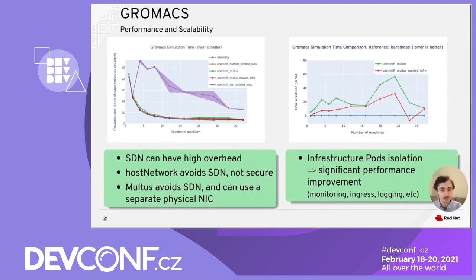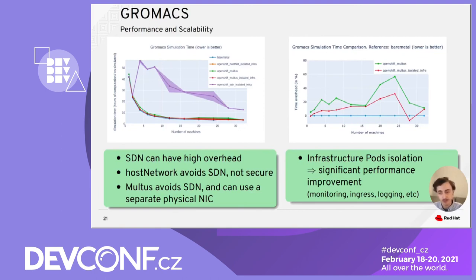Now I will go over some of the benchmarking results from GROMAX. The graph on the left shows the average and standard deviation of five or more runs of GROMAX at different node counts with various network settings and bare metal in blue. The performance measure is hours of computation to simulate one nanosecond, so lower is better. The result using the SDN for all network communications is the clear outlier. To get good performance on more than two nodes, bypassing the SDN is crucial, and using Multus gives performance similar to bare metal or host network without the security implications of host network.